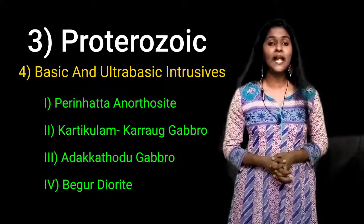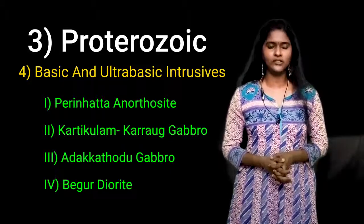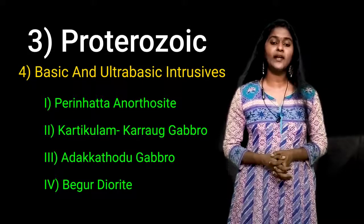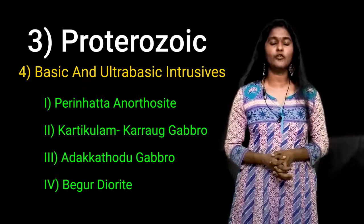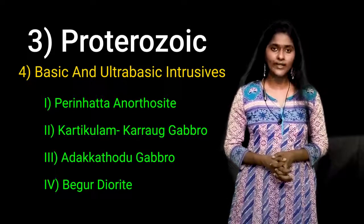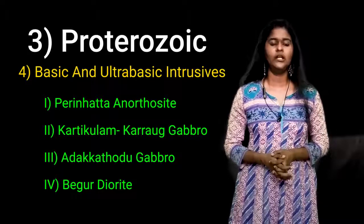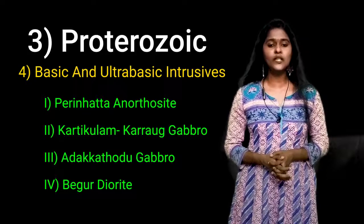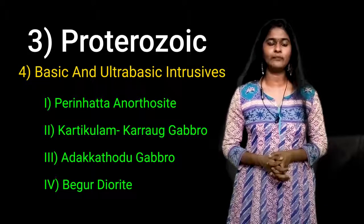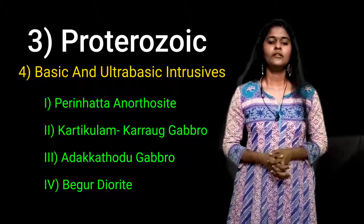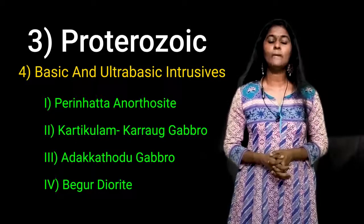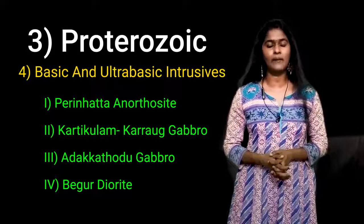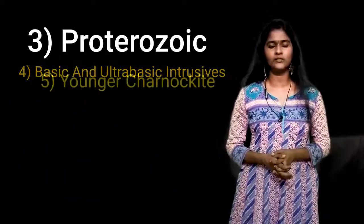The fourth category is Begur diorite. It is an extensive diorite pluton with an aerial extent of 25 square kilometers. It is found in the Begur reserve forest north of Mananthavady. The rock consists of pink to grey feldspar, hornblende and biotite.